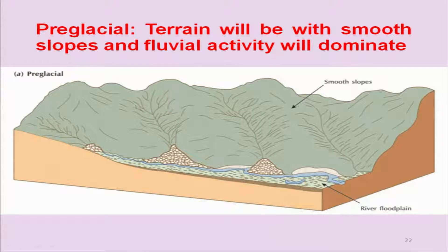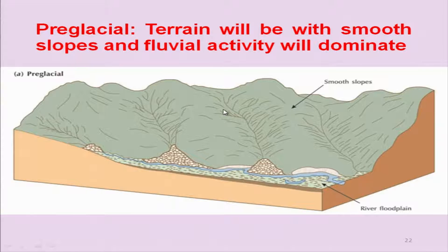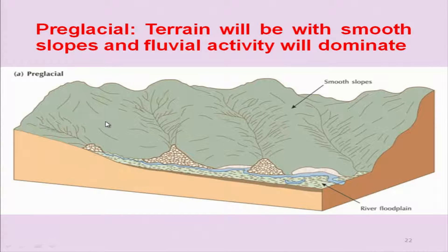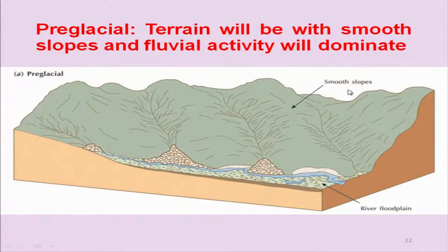Pre-glacial terrain will have smooth slopes and fluvial activity will dominate. Before the glacial landscape or the glacier occupied this area, there is smooth topography, most of the area covered by surface deposition, with drainages very similar to what we see in flat-plane areas. River floodplains will exist and the overall topography will be with smooth slopes.